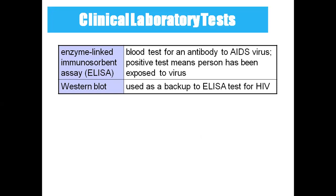Coming to clinical laboratory tests: the ELISA test is done for HIV to know whether the HIV virus has infected the person or whether the person was exposed to the virus. A positive ELISA test confirms the person was exposed to HIV. The western blot is a backup for ELISA to confirm whether the person will get AIDS.